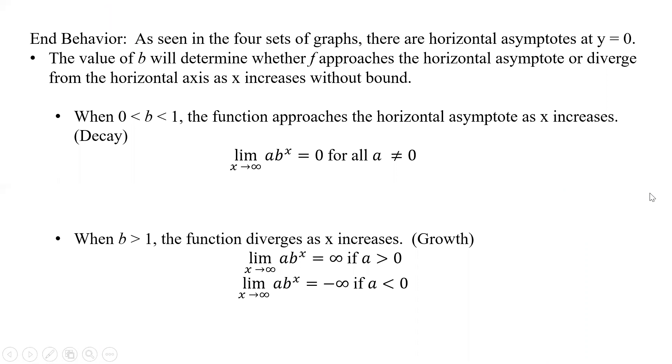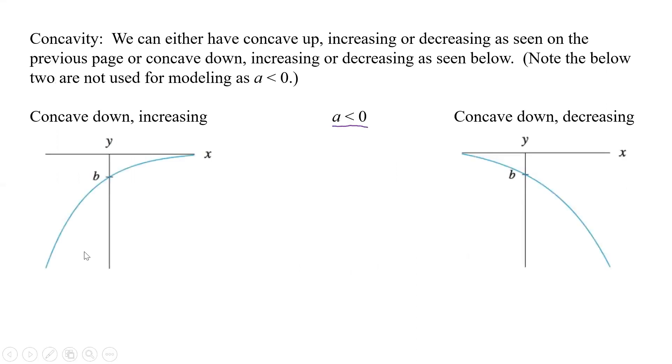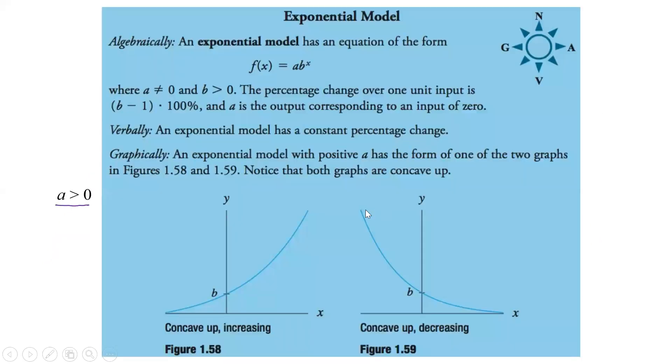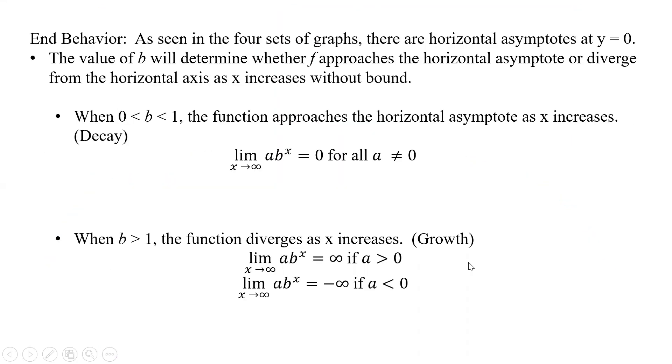So in behavior, as seen in the four sets of graphs we just looked at, there are horizontal asymptotes at y equals 0. So we're going up to 0. That's a horizontal asymptote. And here, as we come down, there's going to be that horizontal asymptote right there. The value of b will determine whether f approaches the horizontal asymptote or diverges from the horizontal axis as x increases without bound. So when b is between 0 and 1, the function approaches the horizontal asymptote as x increases.